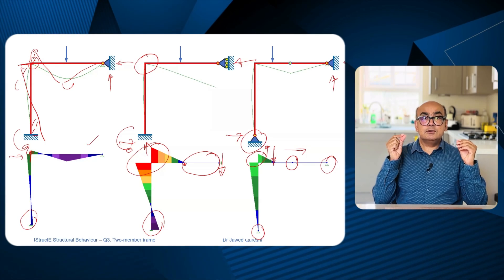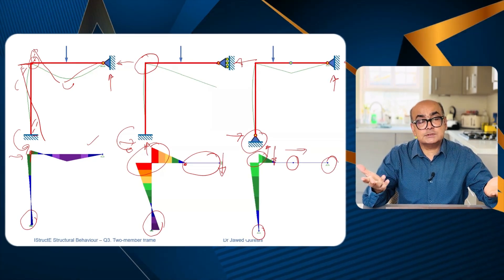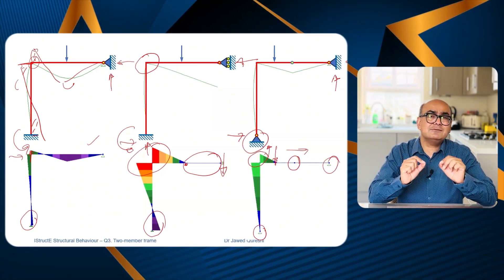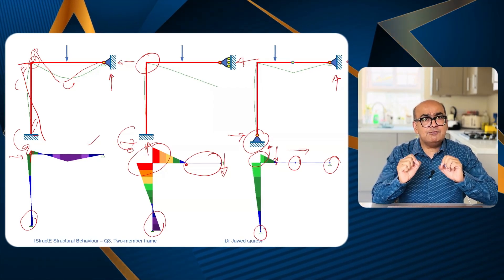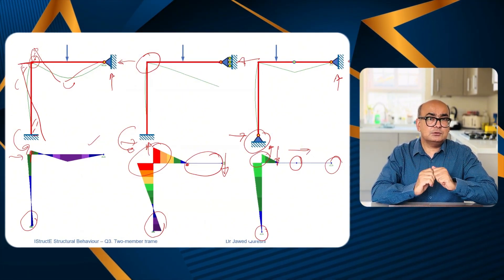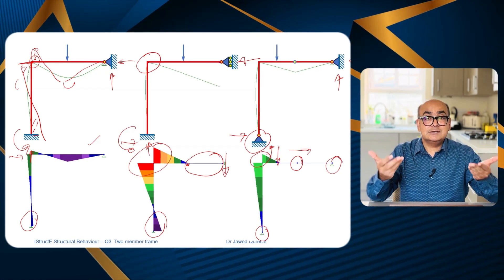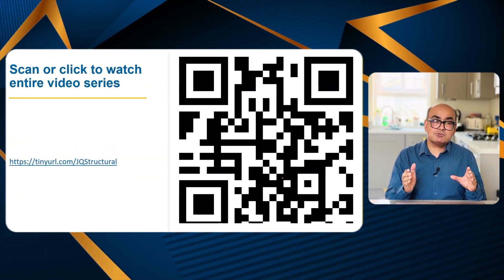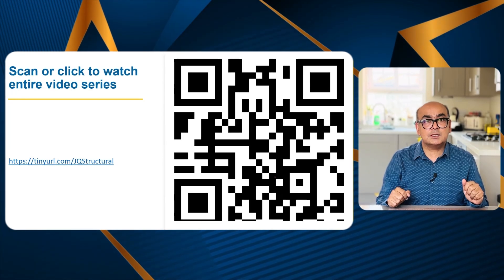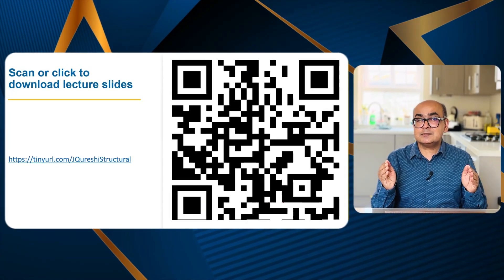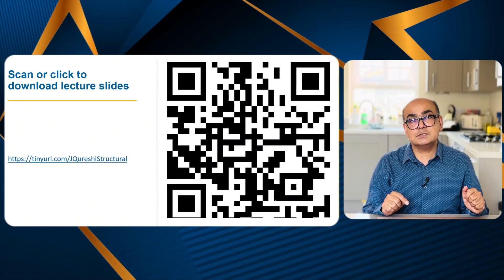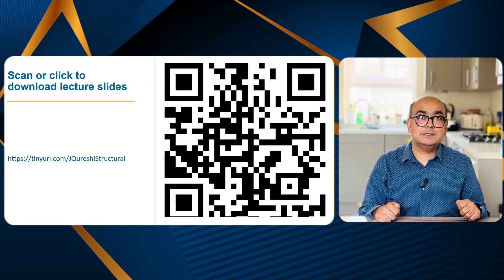Collectively, determining deflected shapes, bending moment diagrams, reactions, shear force, and load paths is termed qualitative analysis. Qualitative analysis is a really important skill that every structural or civil engineer should have in order to verify computer outputs and carry out initial design. If you want to watch the full series on structural behavior, scan the barcode or go to the link provided in the description. Lecture slides are also available via the link below.